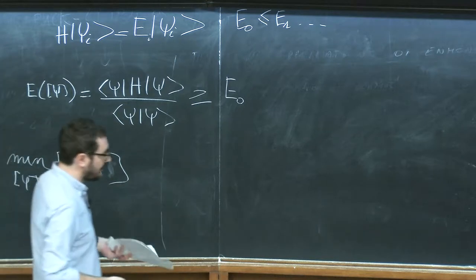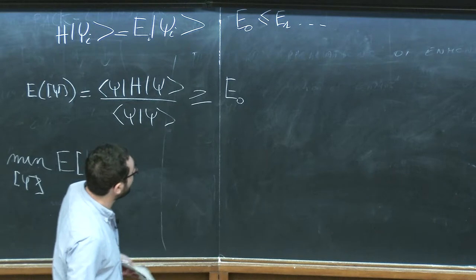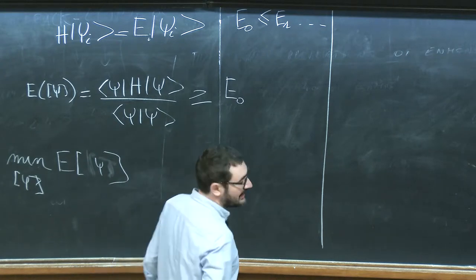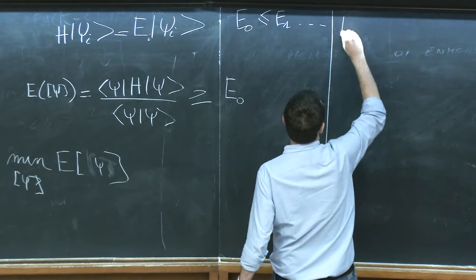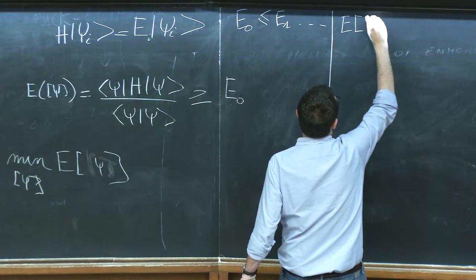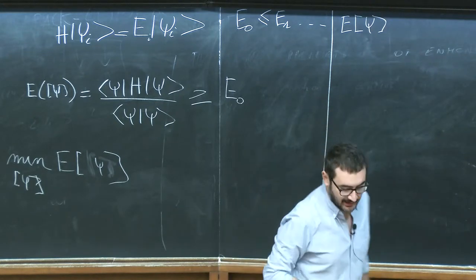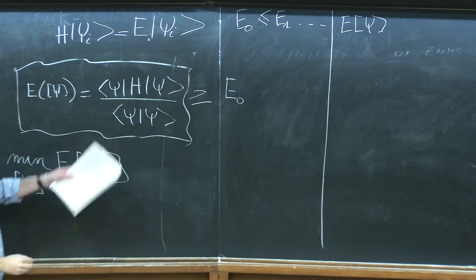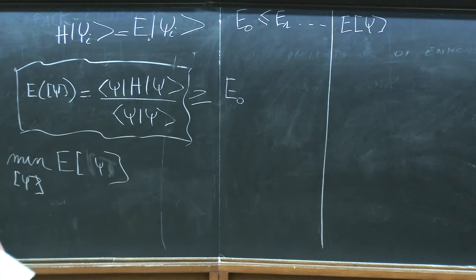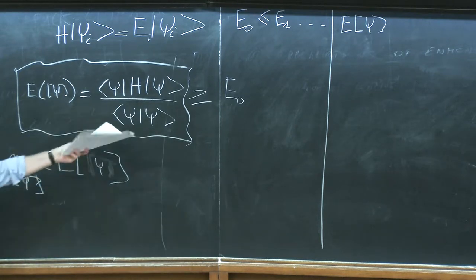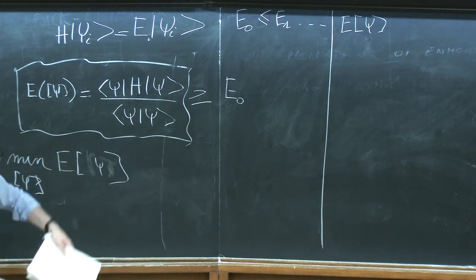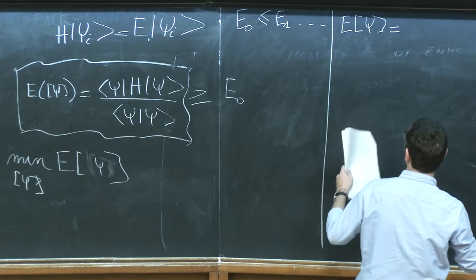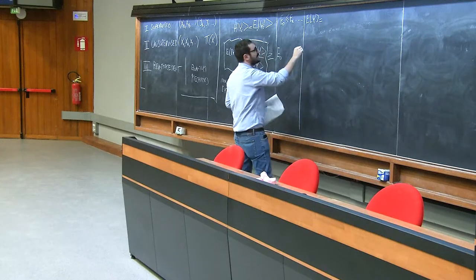The idea of using the variational principle to solve complicated many-body Hamiltonians is not new. However, what was remarked in the 1960s — around the same time machine learning was invented — is that the expectation value over a correlated state is typically hard to compute exactly, unless ψ is a simple product state or has nice analytical properties.